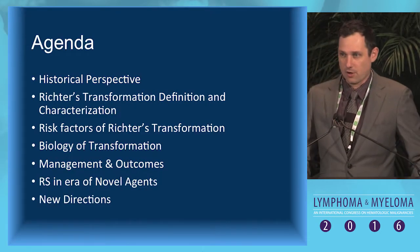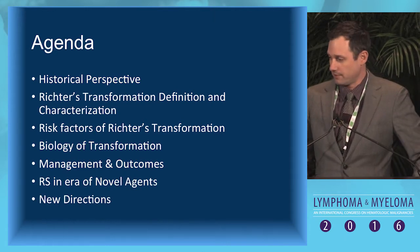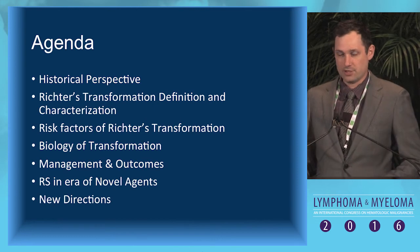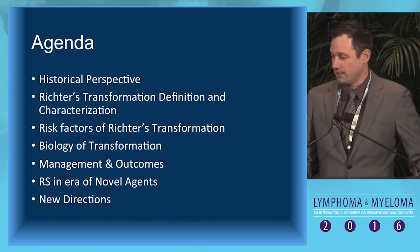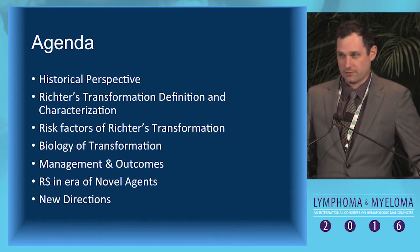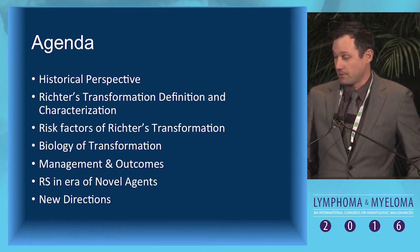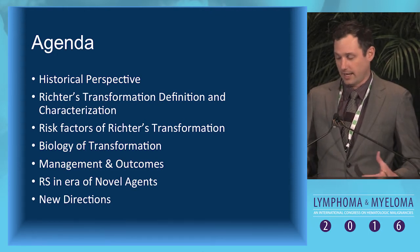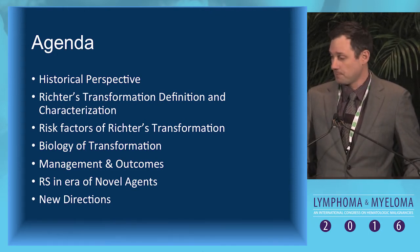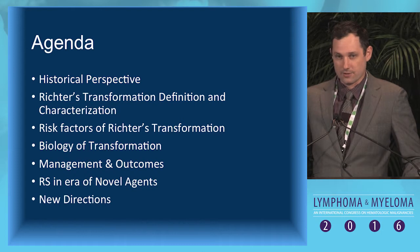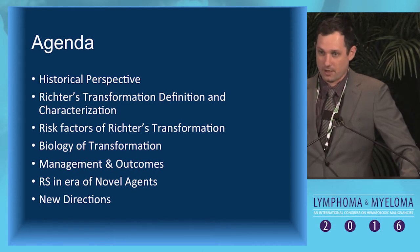Here's the agenda we'll go over: the historical perspective, Richter's transformation — the definition and characterization as a pathological entity — the risk factors of transformation from CLL to Richter's, the biology behind that, management and outcomes, Richter's syndrome in the era of novel agents, and then new directions to address this unmet need.